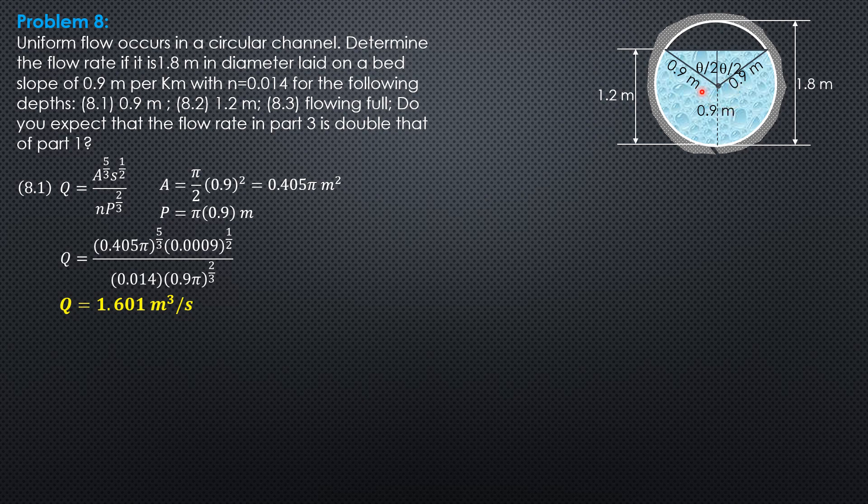This is 360 minus theta, and cosine of theta over 2 equals 0.3 over 0.9. So from there we can solve for theta, 141.06 degrees.